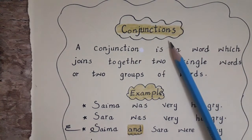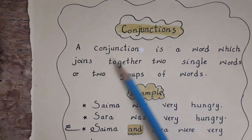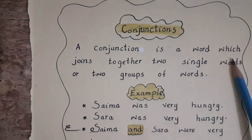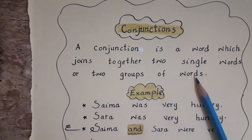So let's see the definition of conjunction. A conjunction is a word which joins together two single words or two groups of words.